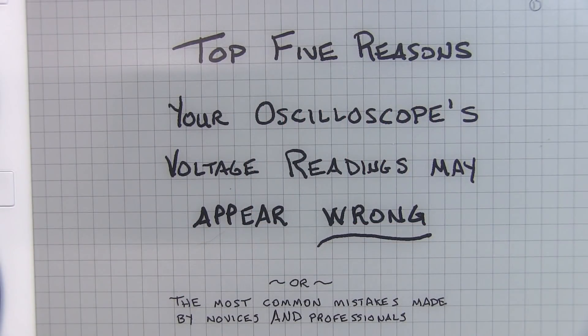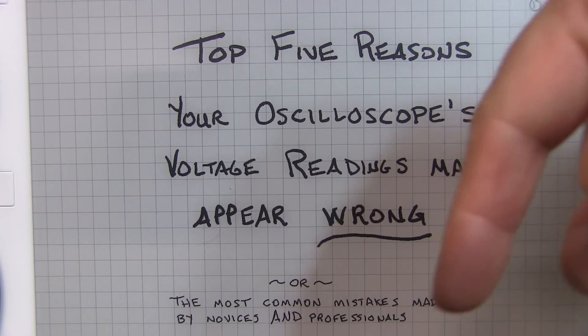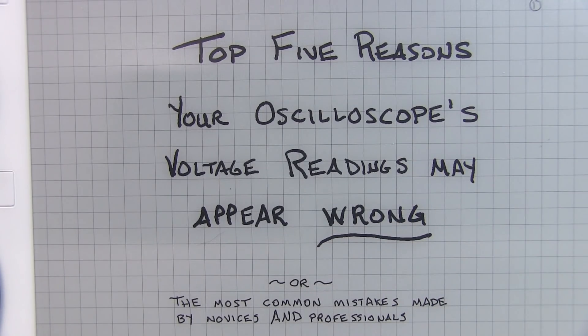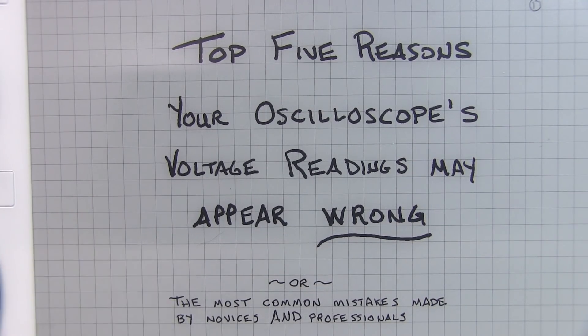So there you have it. The top five reasons your scope voltage readings might appear wrong. All of the links to the videos that I've mentioned for each of these five reasons will be in the video description down below, as well as a PDF copy of these notes.